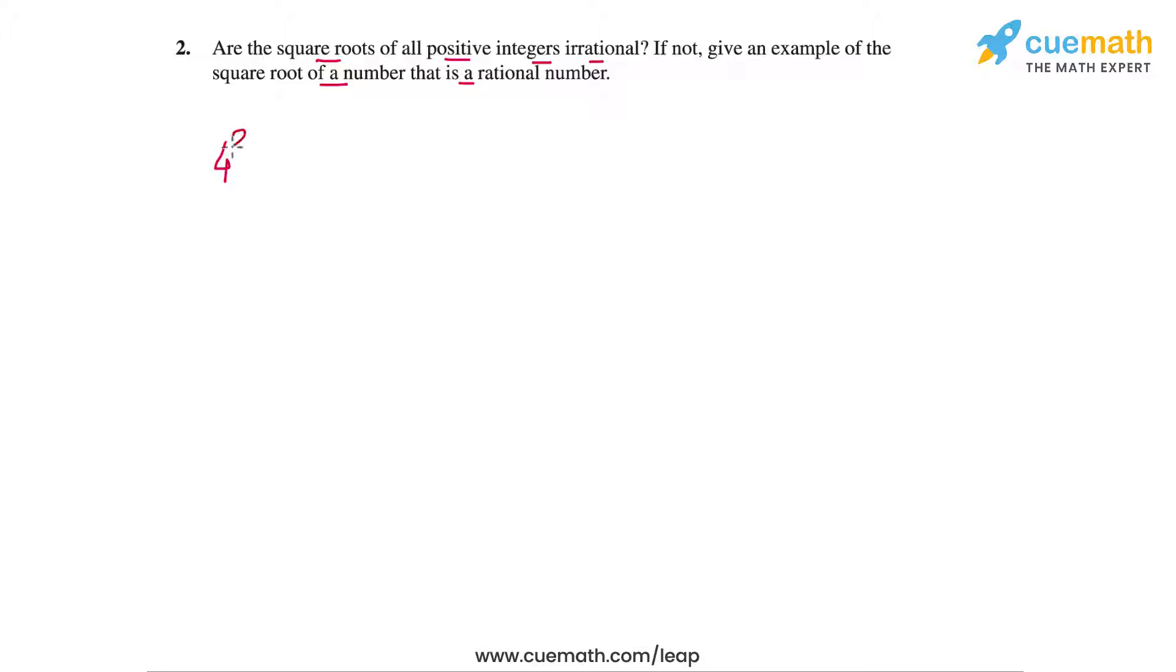because 4 square is equal to 16, this means that the square root of the positive integer 16 is the integer 4, which is not an irrational number.